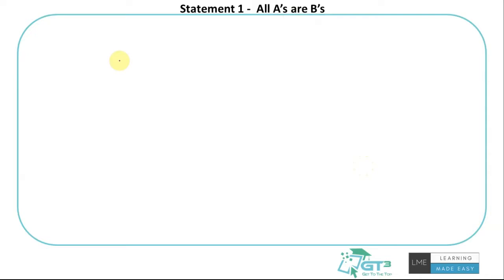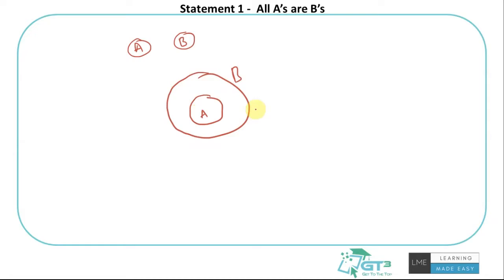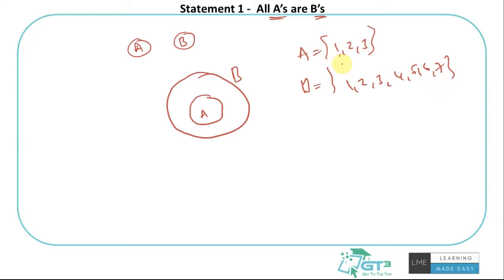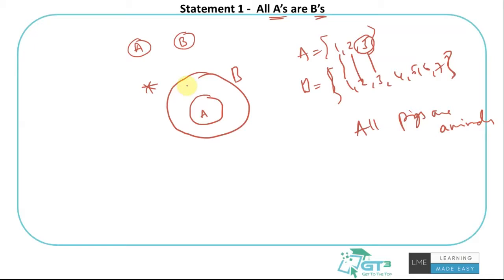The first statement is: All A's are B's. Every element in A is in B. The diagram looks like A as a small circle completely inside a larger circle B — because all A's are B's. If A is {1, 2, 3} and B is {1, 2, 3, 4, 5, 6, 7}, every element in A is part of B. Whenever you see 'all something are something' — for example, all pigs are animals — draw this figure.